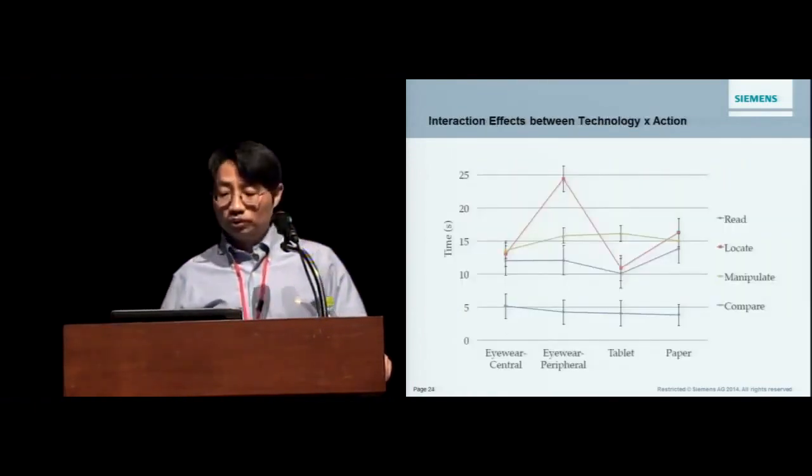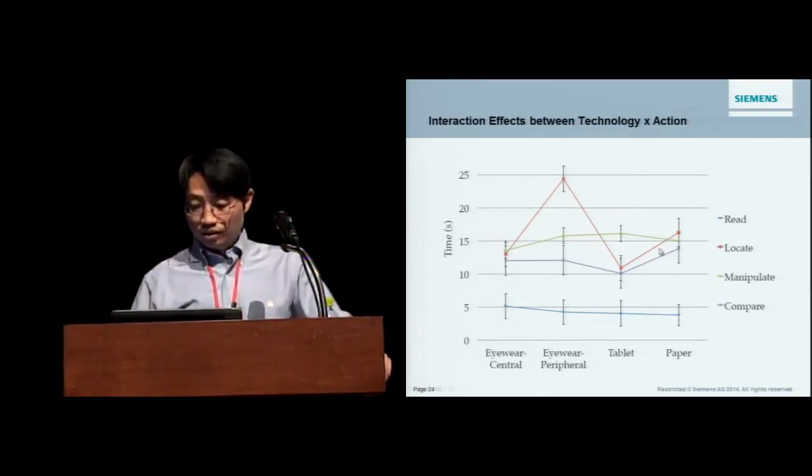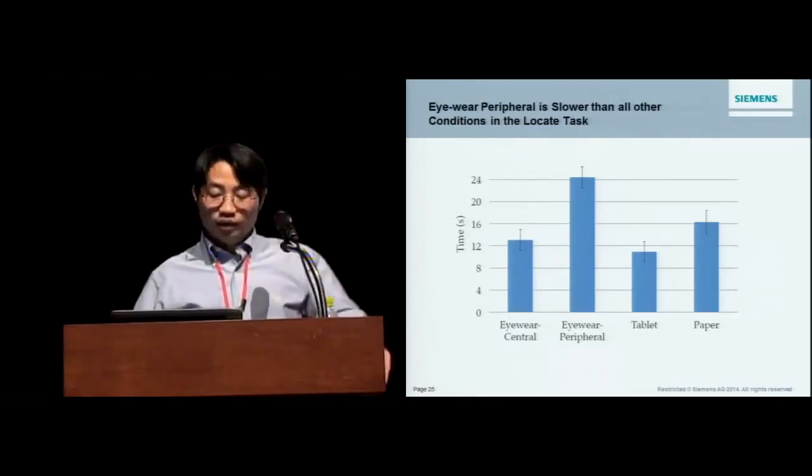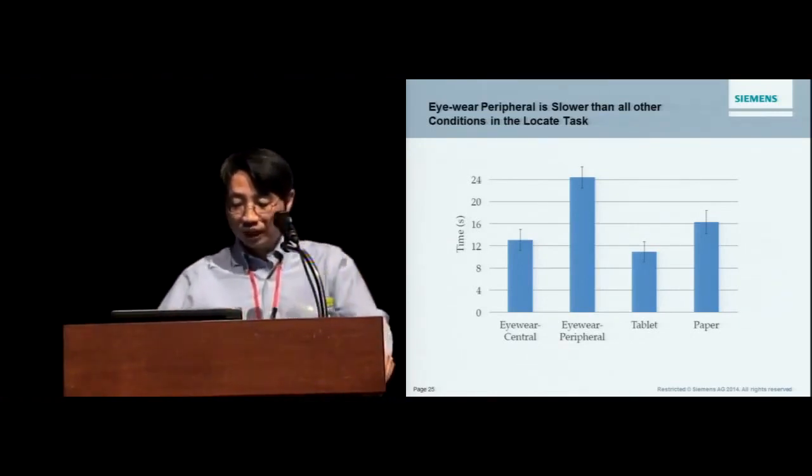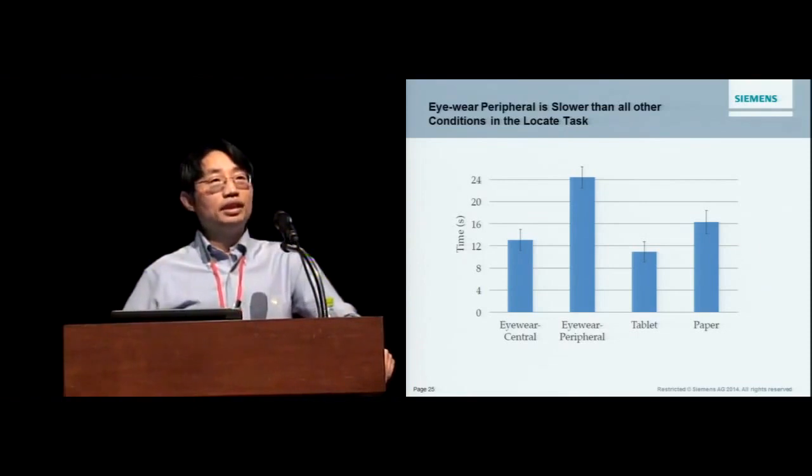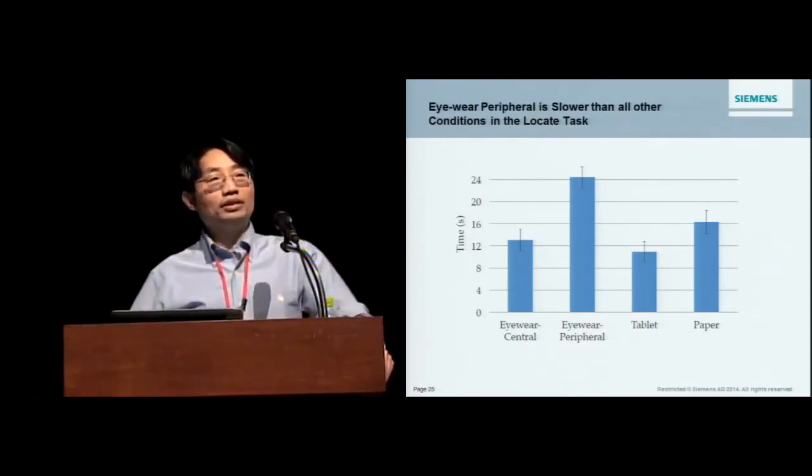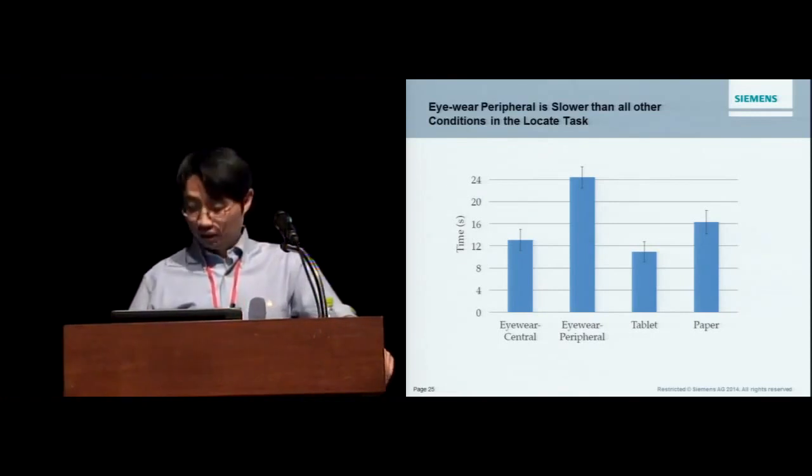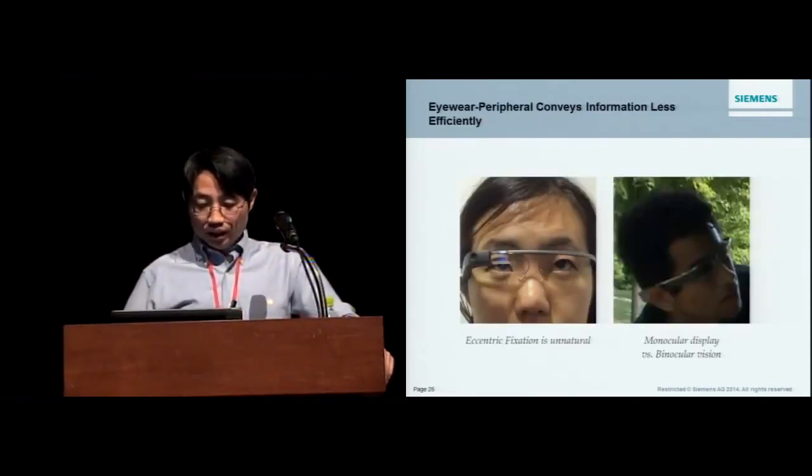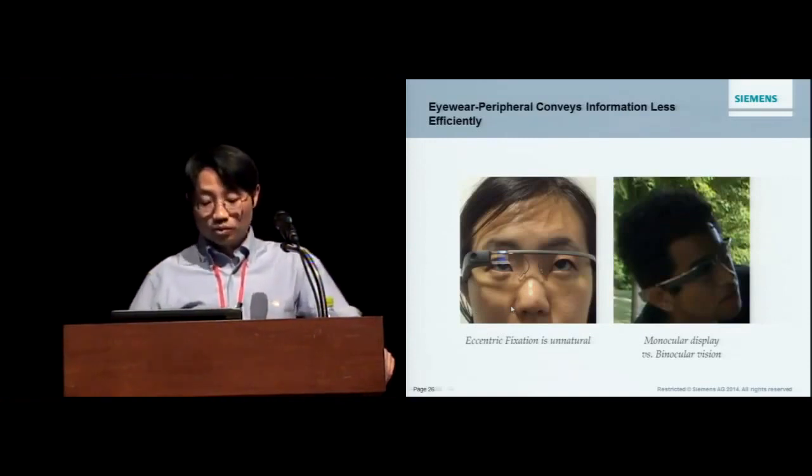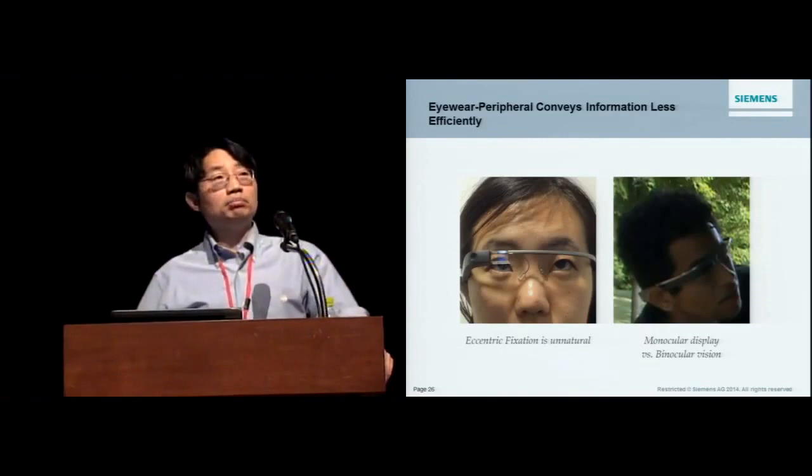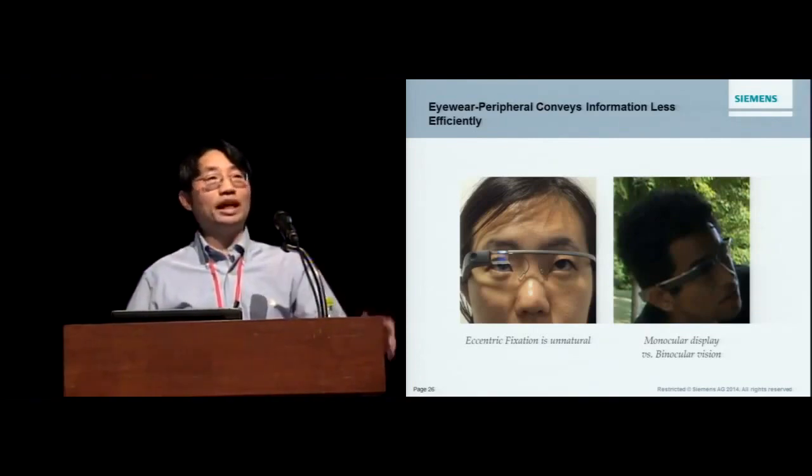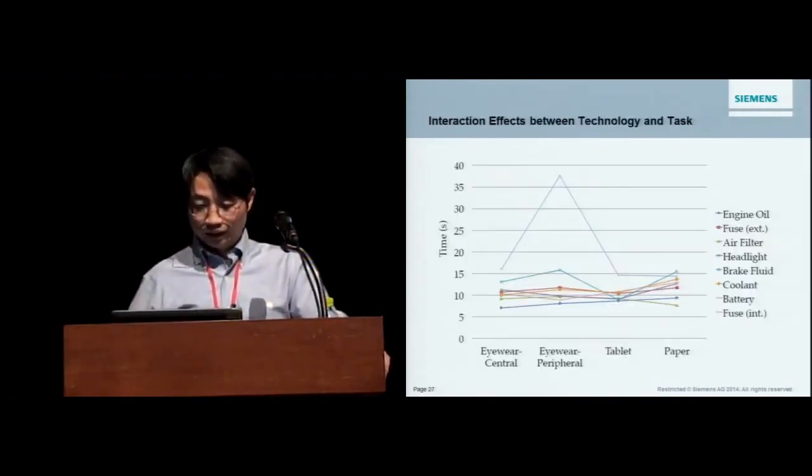And there's interaction effect between the technology and action. So it turns out, the manipulate and locate actions are really bad with eye-wear peripheral. And if you look closely, in the locate task, people need to spend a little more time to look for the task. And the longer people need to hold their eyes at an uncomfortable position, the worse they perform. And so there are two reasons why this eccentricization is really unnatural, and also the monocular display, complete information, so people have to filter out one visual channel in order to look at the other channel, and that's becoming really difficult.